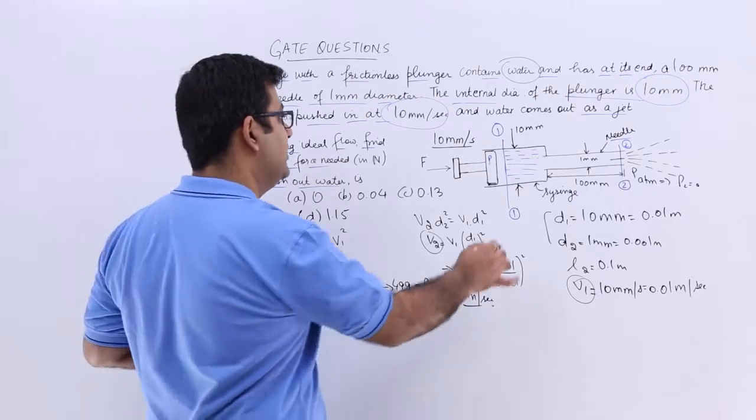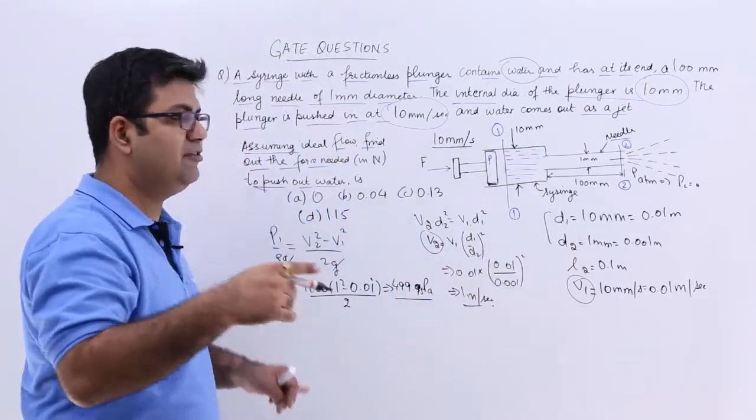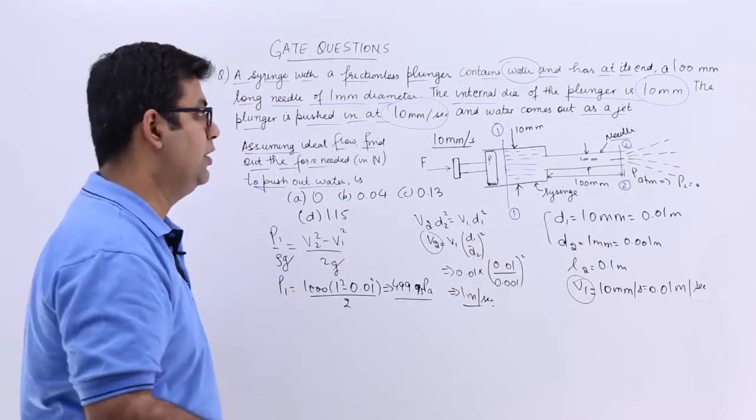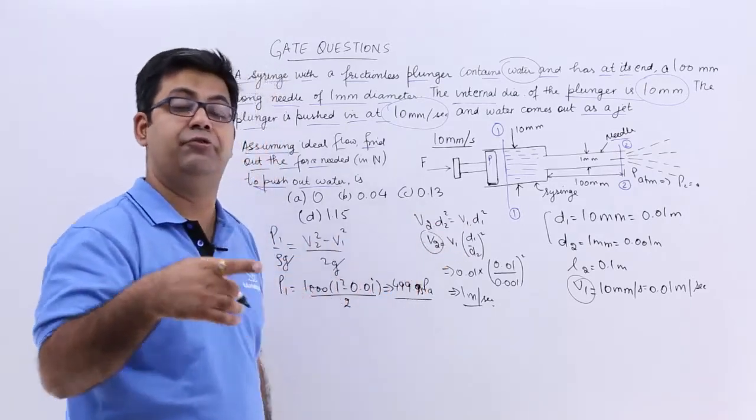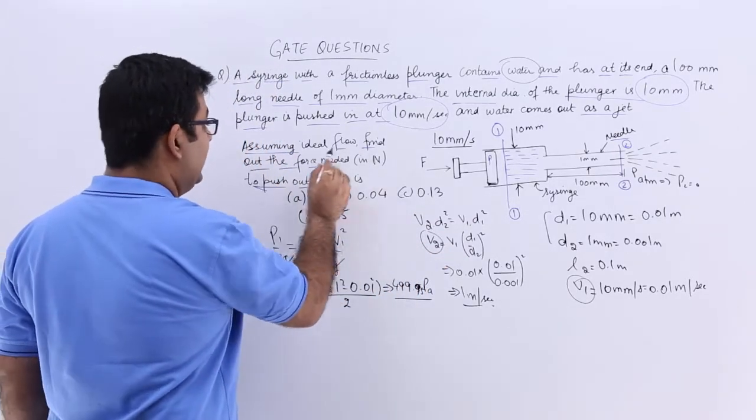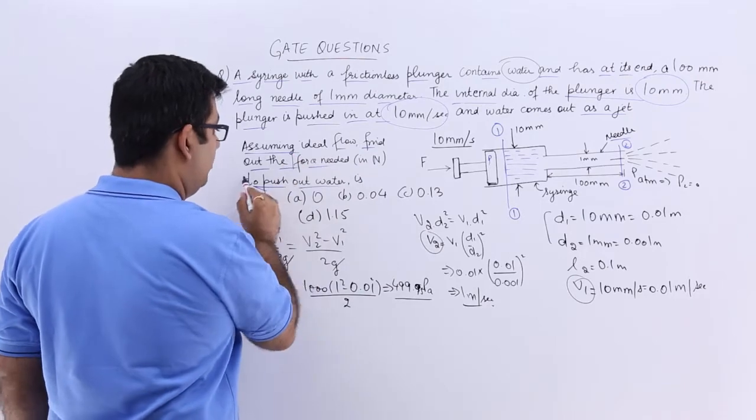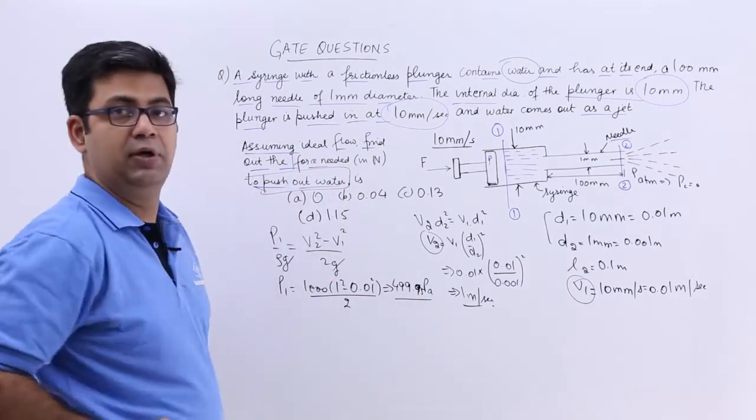So this is the pressure at section 1. So if you have the pressure at section 1 you can find out the pressure force and that is the force which is needed to push out the water through the needle.